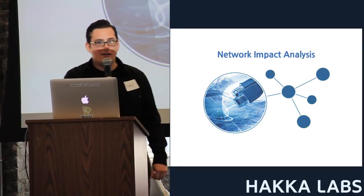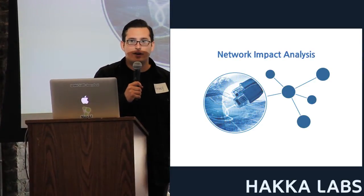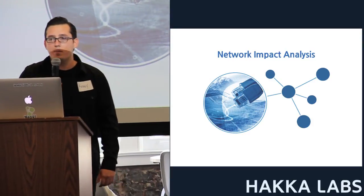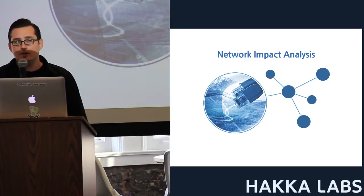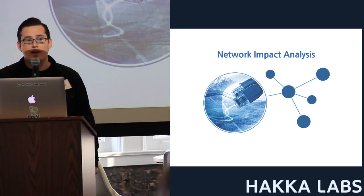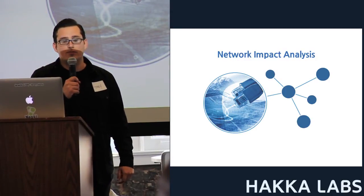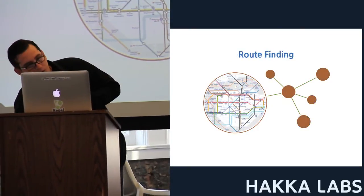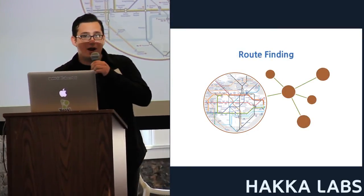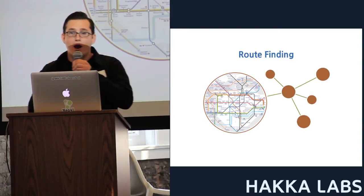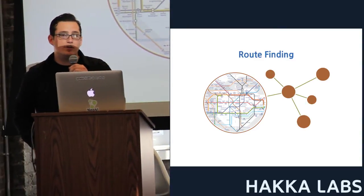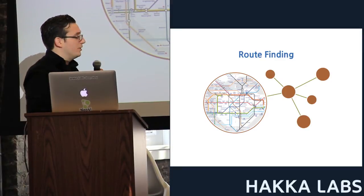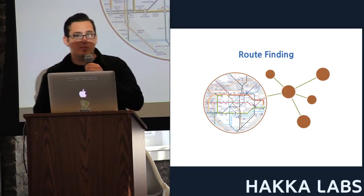Network impact analysis: let's assume that you have a set of servers or applications, and you're mapping the dependencies between them to understand impacts or a single point of failure. A popular use case is route finding — show me the route between point A and point B. A simple example is the London tube, but Google Maps is another good example.